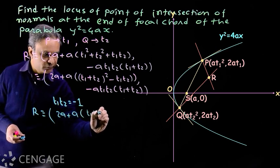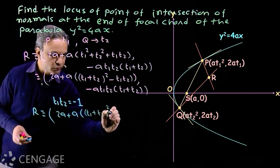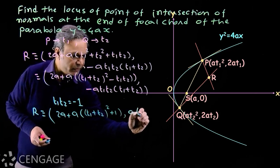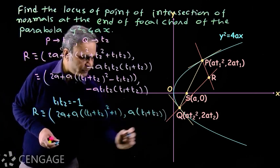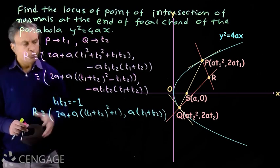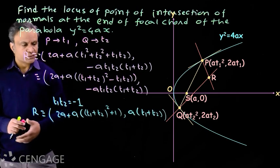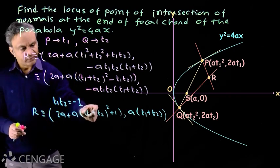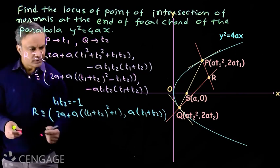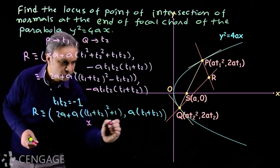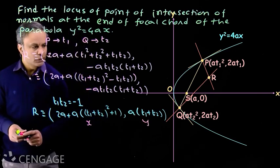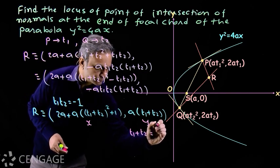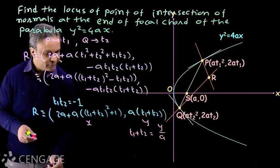The coordinates of point R become: x = 2a + a[(t₁ + t₂)² + 1] and y = a(t₁ + t₂). Point R is variable because t₁ and t₂ are variables. To get the equation of the locus of point R, we must eliminate variables t₁ and t₂. Suppose the coordinates of point R are (x, y). From the y-coordinate comparison, we get t₁ + t₂ = y/a.